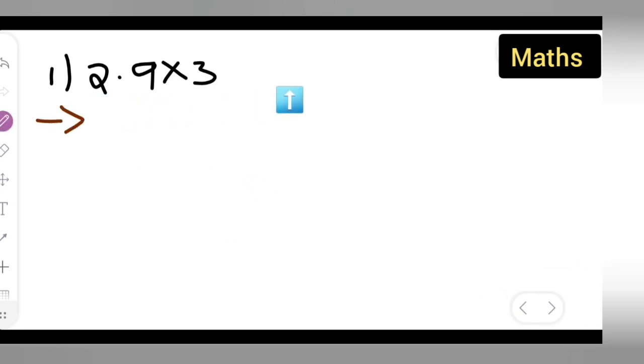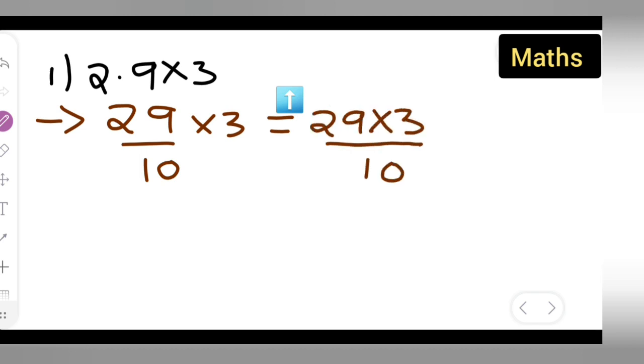So here what you can do is write down 29 upon 10 multiplied by 3. This will be equal to 29 multiplied by 3 upon 10. So you can multiply and see, 29 multiplied by 3 is how much?